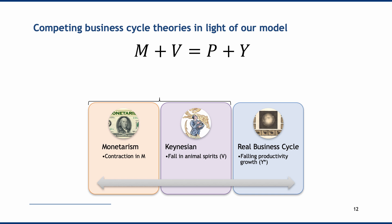By contrast, Keynesian economists focus on people's desire to spend money — their confidence, or animal spirits — which is the V variable. In a recession, Keynesians focus on correcting downturns in business and consumer confidence, using government spending to lift spirits and get spending going again. Notably, both monetarists and Keynesians offer aggregate demand explanations for business cycles. They differ only on which policy tools are most effective — monetary policy or fiscal policy.